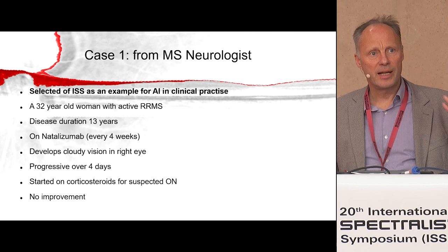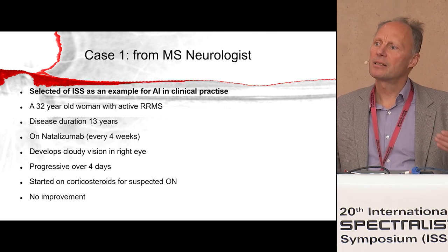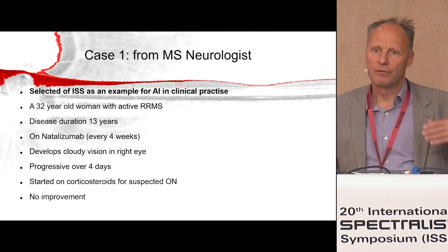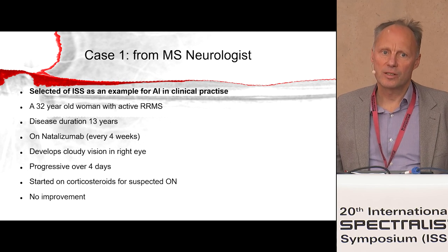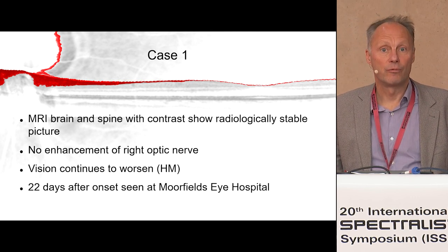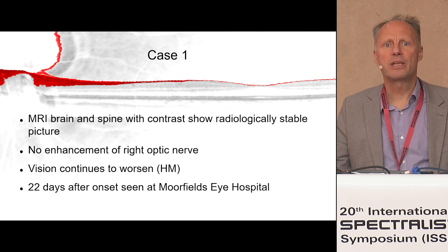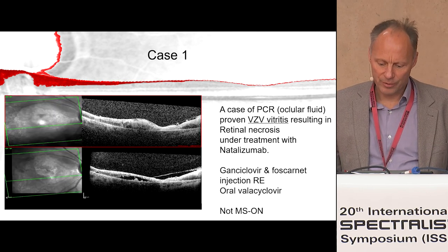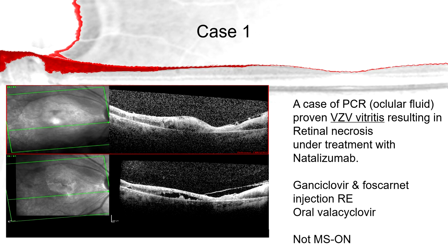It's a young lady who has had multiple sclerosis for 13 years and she's on a very potent drug called natalizumab. Under this drug she develops loss of vision progressing over four days, and the diagnosis of optic neuritis is made. She gets steroids but vision does not improve; in fact imaging of the brain and optic nerve was normal. Vision continues to reduce to hand movements only, and about three weeks later she presents to Moorfields Eye Hospital. The retina you see here is not optic neuritis - this is retinal necrosis in the context of VZV vitritis. This is a blind eye.